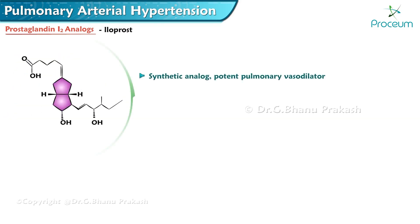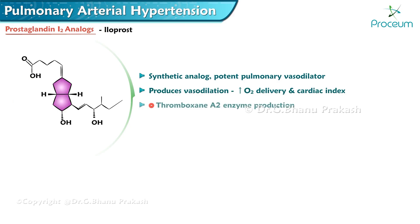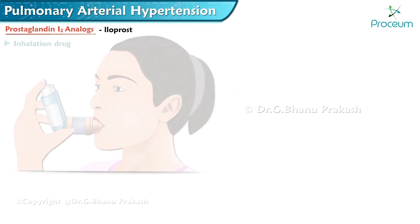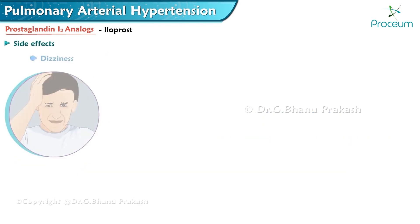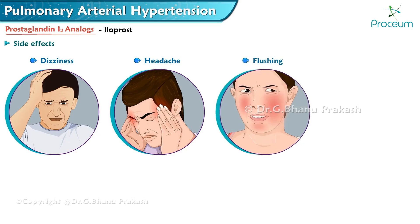Iloprost is a synthetic analog and a potent pulmonary vasodilator. It produces vasodilation in the endothelial cells, increases oxygen delivery and cardiac index, and inhibits the production of thromboxane A2. It is given as an inhalation drug to enhance localized action and minimize systemic side effects. Frequent dosing is needed due to its shorter half-life. Side effects include dizziness, headache, flushing, and syncope.